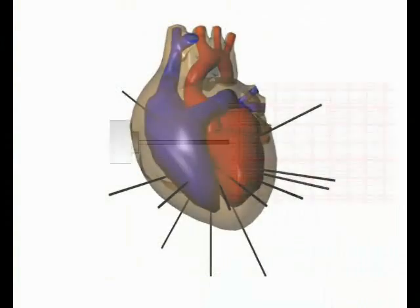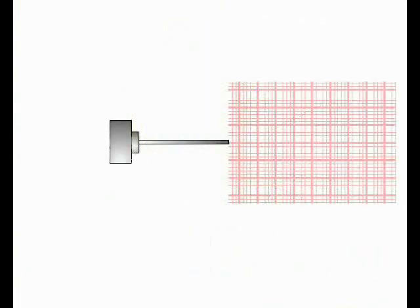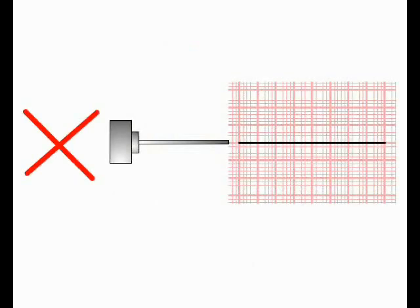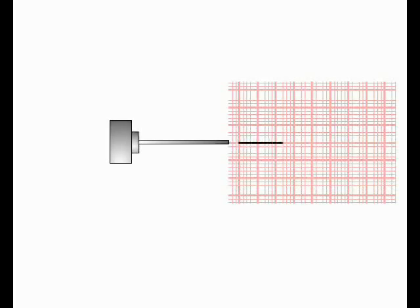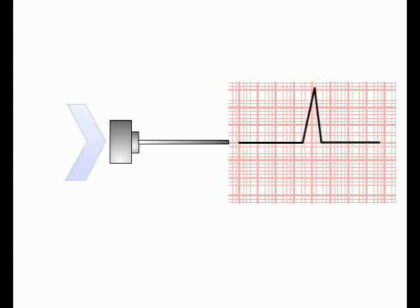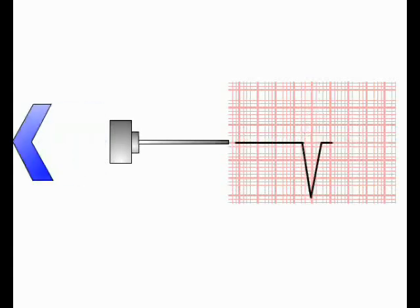We need to understand how the individual ECG leads analyze and record cardiac current. In any ECG lead, the flat line recorded on the readout when no net current is flowing is termed the isoelectric line. All of the ECG leads are set up such that depolarizing current moving towards a lead produces a deflection above the isoelectric line — a positive deflection — while depolarizing current moving away from the lead produces a deflection below the isoelectric line — a negative deflection.